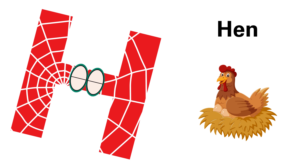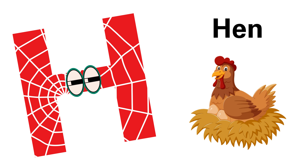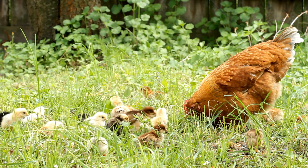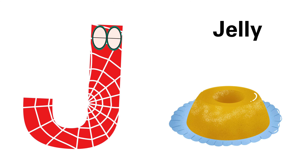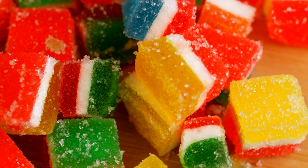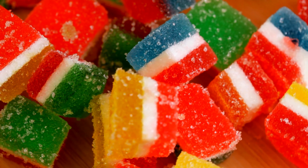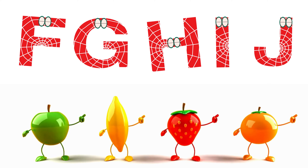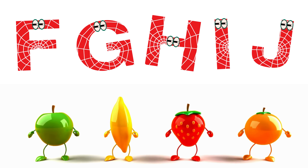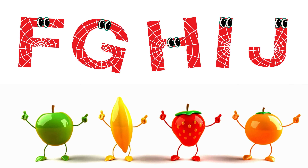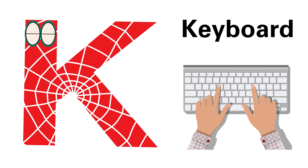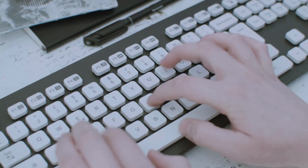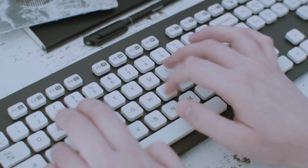A is for Apple, A-A-Apple, A-A-Apple, A-Apple. B is for Baby, B-B-Baby, B-B-Baby, B-Baby. C is for Candy, K-K-Candy, C-Candy. D is for Diamond, D-D-Diamond, D-D-Diamond, D-Diamond. E is for Elephant, A-A-Elephant, A-A-Elephant, E-Elephant.